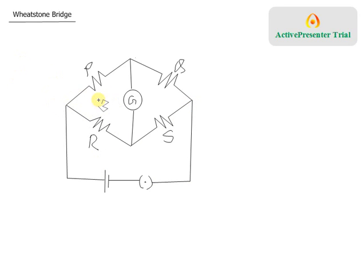The reason it is called a bridge is like this. Imagine from end A you want to go to end D — these are the two parallel paths, and the galvanometer branch is like the middle stick of a ladder. So this looks like a bridge, according to whoever named it — that must be Mr. Wheatstone.